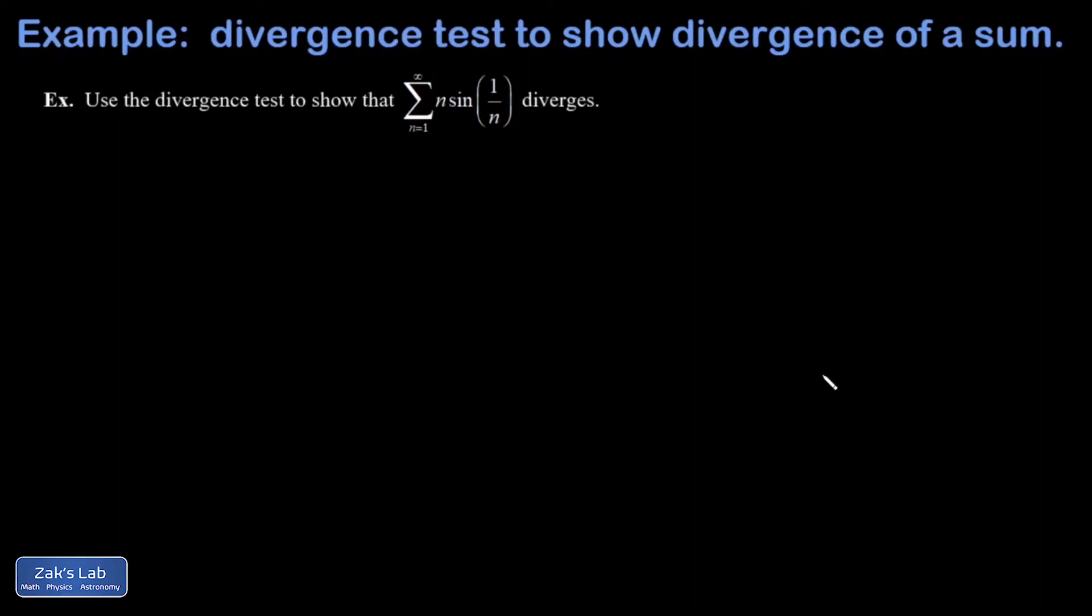In this problem, we're asked to use the divergence test to show that the series diverges. We're just looking at the large n limit of the individual terms. And if that doesn't go to zero, then there's no way the series is going to converge to some finite number. So you can use this to show divergence, but you can't use it to show convergence.